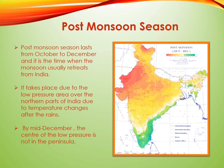Post-monsoon season lasts from October to December, and it is the time the monsoon usually retreats from India. Rainfall is almost nil, except for the eastern coast, Kerala, and a few parts of northeastern regions. It takes place due to the low pressure area over the northern parts of India, caused by temperature changes after the rains. By mid-December, the center of low pressure is not in the peninsula.